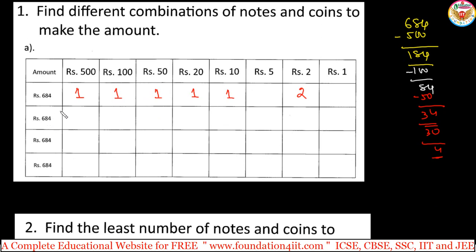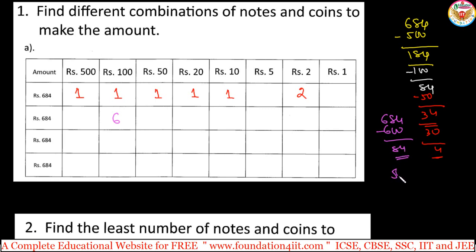Now a different combination for 684. You cannot take two 500-rupee notes because that would be 1000, exceeding 684. Instead, take 6 notes of 100 rupees, making 600. Remaining is 84. For 84: take 1 note of 50, 1 note of 20, 1 note of 10 — that is 80 — and then 2 coins of 2 rupees for the remaining 4. This is another valid combination.